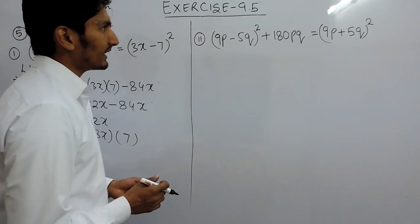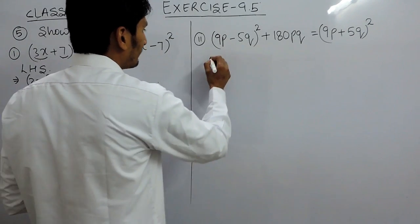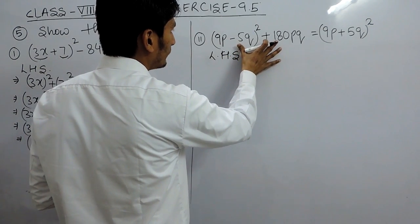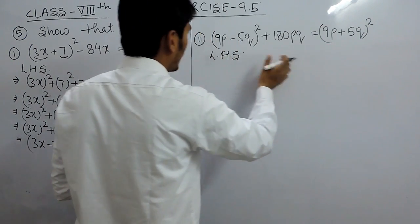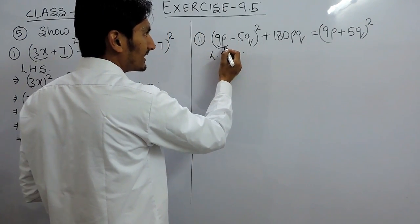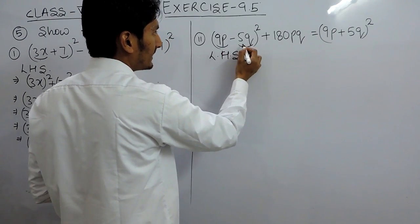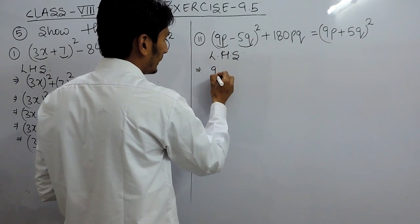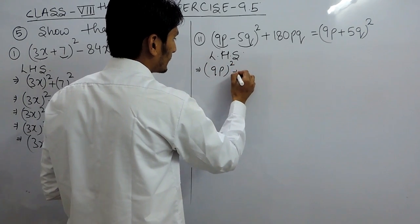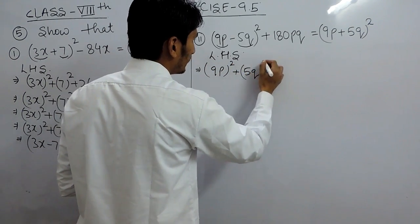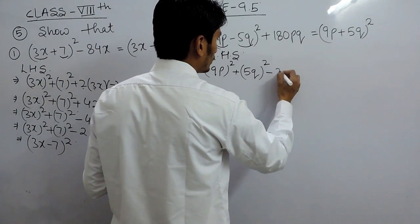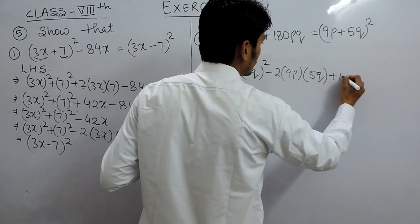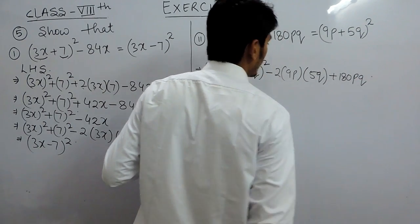Now let's solve the second part. Again let's solve for the left hand side — I have to prove that solving this value gives the right hand side. If I consider 9p as 'a' and 5q as 'b', then this is (a − b) whole square. Expanding: (a − b)² = a² + b² − 2ab, and plus 180pq remains as it is.